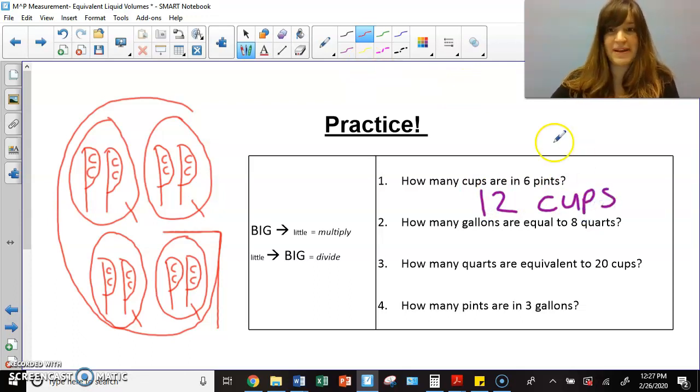I could also do that by seeing that there's two cups in one pint. So I'd multiply six times two because pints are bigger than cups. And if I'm going from big to little, I'm going to multiply. This is asking me how many gallons are equal to eight quarts. So I have four quarts pictured right here. So if I doubled that, I'd have four quarts plus four more,